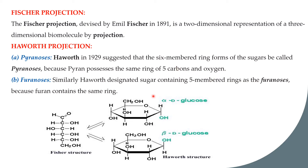If the OH groups and CH2OH are present on the pyran ring, it is called pyranose. Similarly, the furan ring is a five-membered ring with one oxygen and four carbons; if that furan ring contains OH groups as in a carbohydrate, it is called furanose. In the closed ring Haworth structure, if the OH on carbon 1 is opposite to CH2OH, it is alpha-D-glucose; if it is in the same direction as CH2OH (both upward), it is beta-D-glucose.